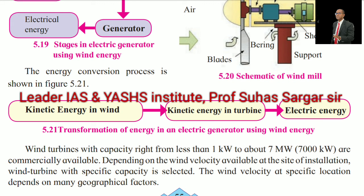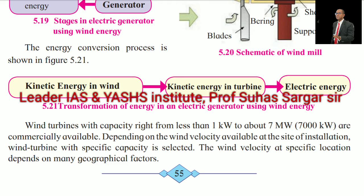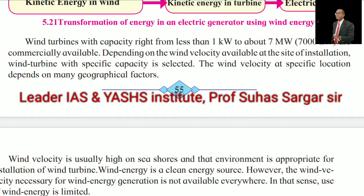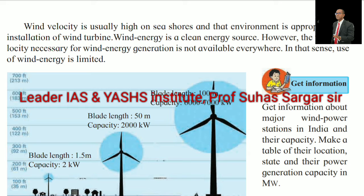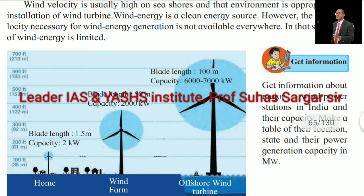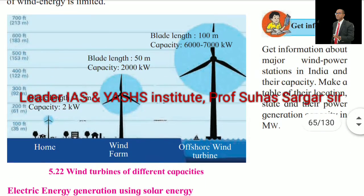The transformation of energy in an electric generator using wind energy is shown in the figures. Wind turbines with capacity ranging from less than 1 kW to about 7 MW are commercially available. Depending on the wind velocity available at the site of installation, the wind turbine with a specific capacity is selected. The wind velocity at a specific location depends on many geographical factors. The wind velocity is usually high on seashore, and that environment is appropriate for installation of wind turbines. Wind energy is a clean energy source. However, the wind velocity necessary for wind energy generation is not available everywhere, so use of wind energy is limited. Get information about major wind power stations in India and their capacity.